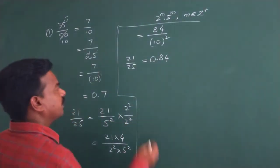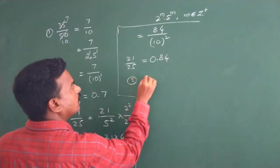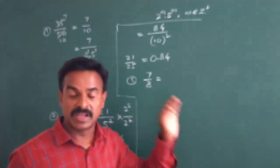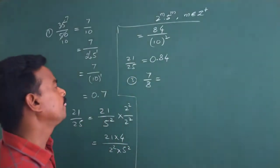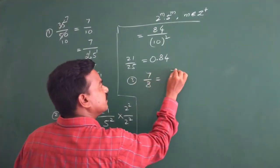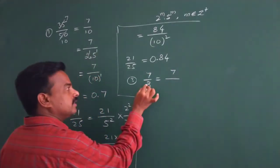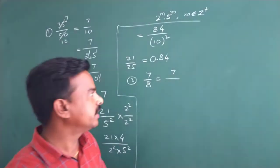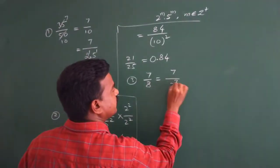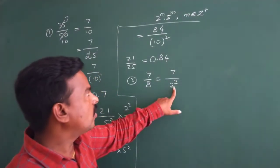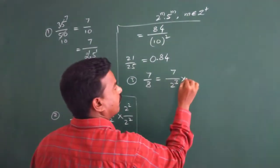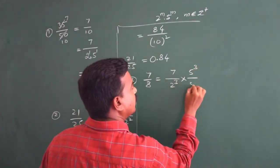Let us take one more example, that is 7 by 8. We observe whether it is in simplified form — yes, 7 by 8 is already in simplified form. Next, we write the denominator in its powers of prime factorization. 8 equals 2 to the power of 3. To get the denominator in the form of 2 to the power of M times 5 to the power of M, we need to multiply by 5 to the power of 3 over 5 to the power of 3.